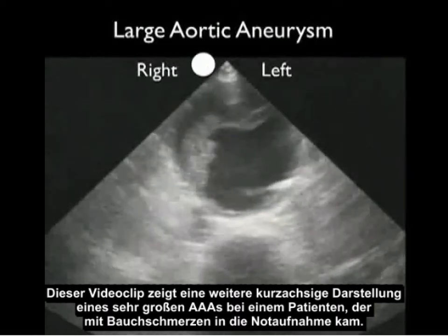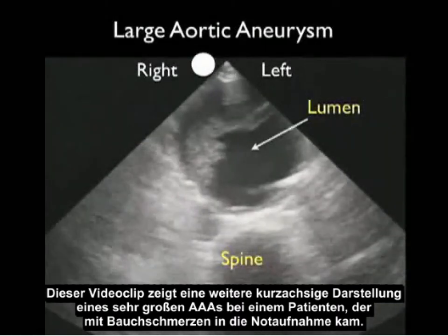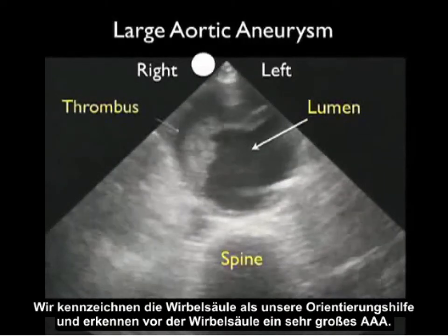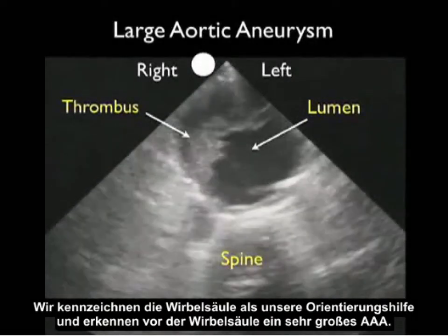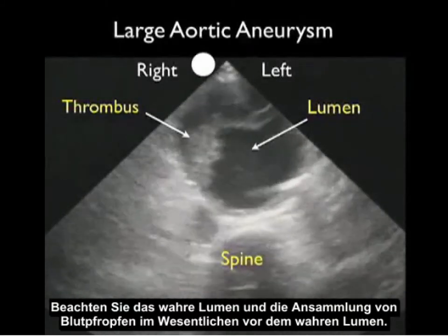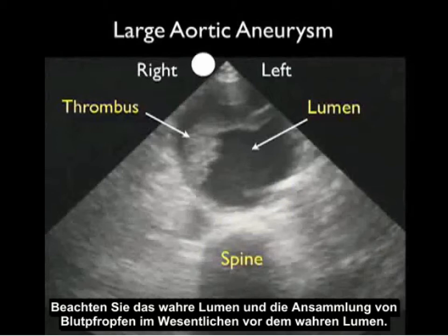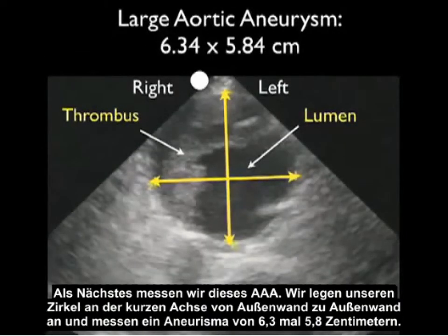This video clip is another short axis orientation of a very large AAA in a patient who presented to the ED with abdominal pain. We mark the spine as our landmark, and anterior to the spine we see a very large AAA. Notice the true lumen and the accumulation of thrombus seen substantially anterior to the true lumen. We've placed our calipers from outer wall to outer wall in a short axis configuration and come up with an aneurysm of 6.3 by 5.8 centimeters, again meeting the criteria of a very large AAA greater than 3 centimeters.